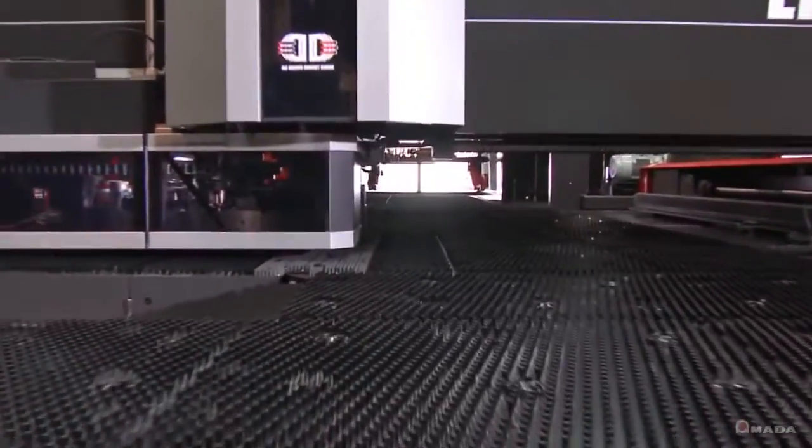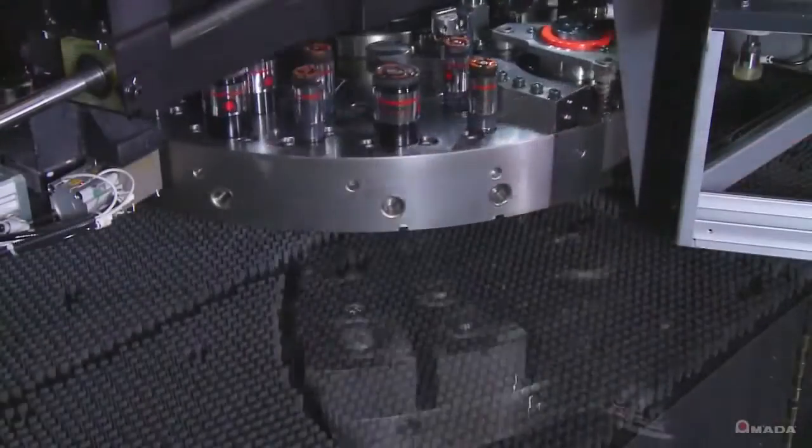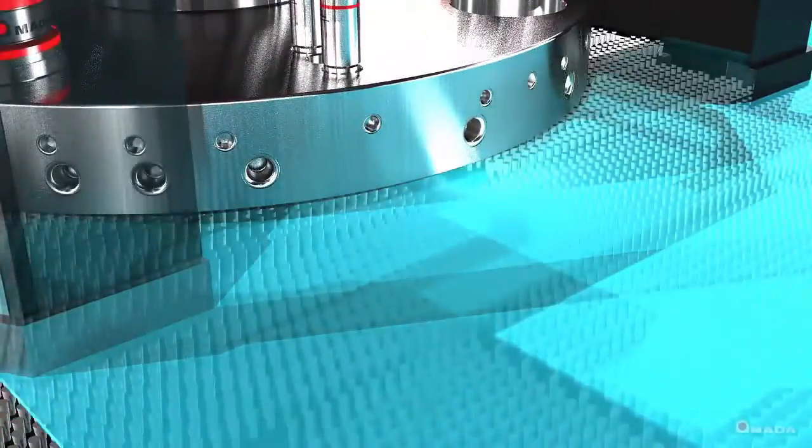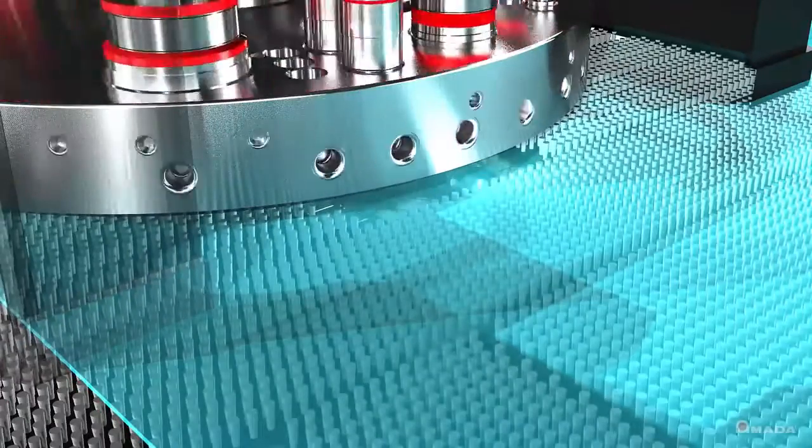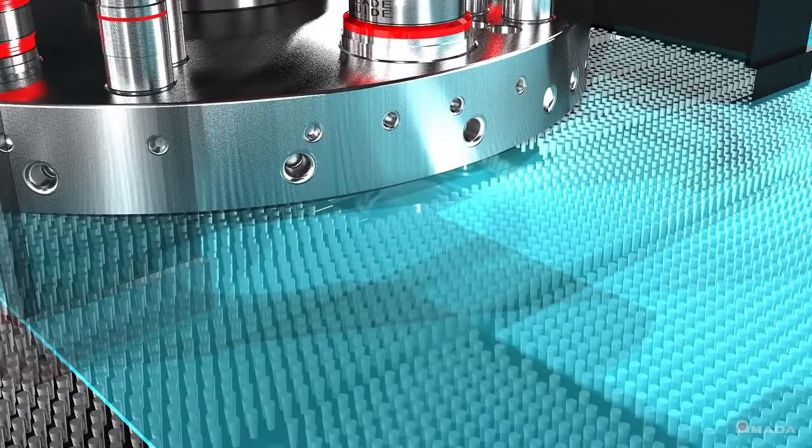The ZR turret configuration features a lower turret which is recessed under the brush table. As the turret rotates to use a different tool, the corresponding die rises through a window on the brush table.